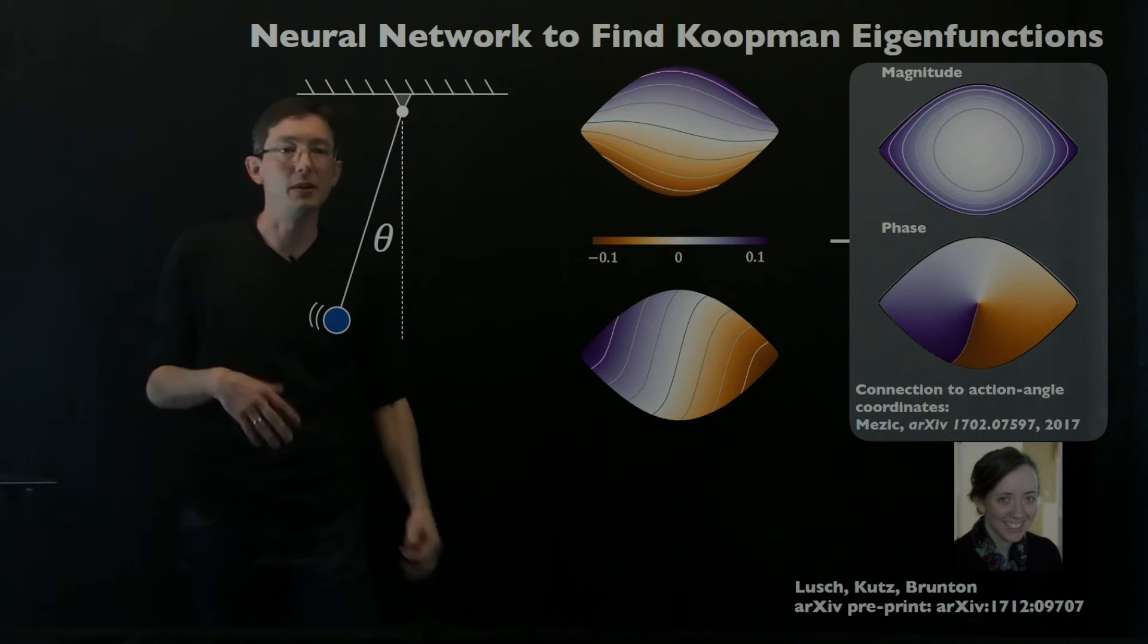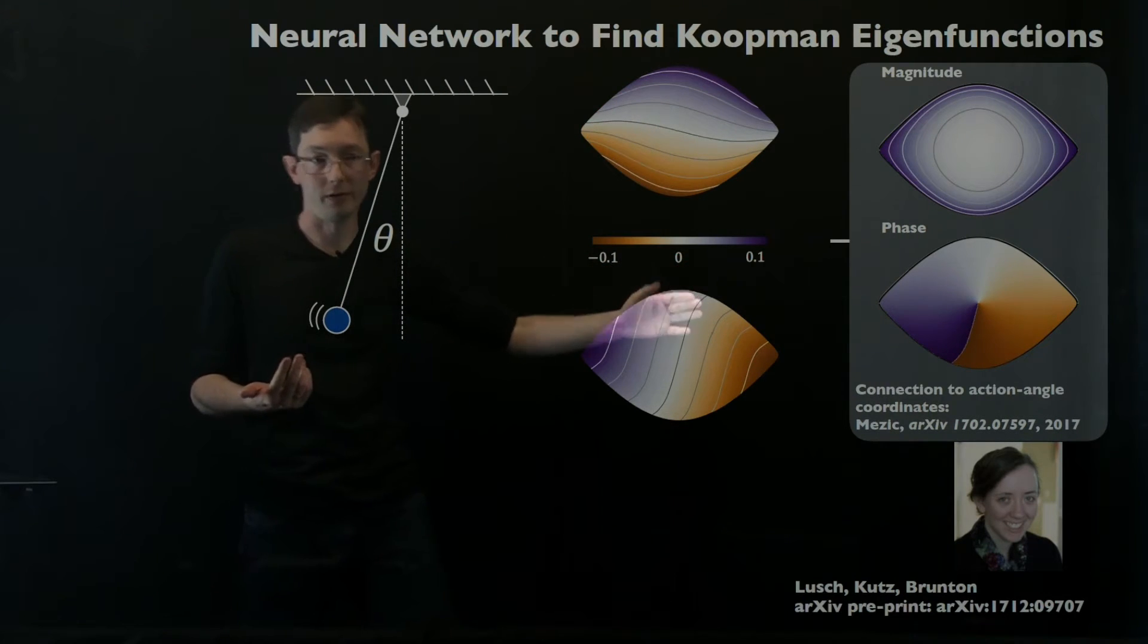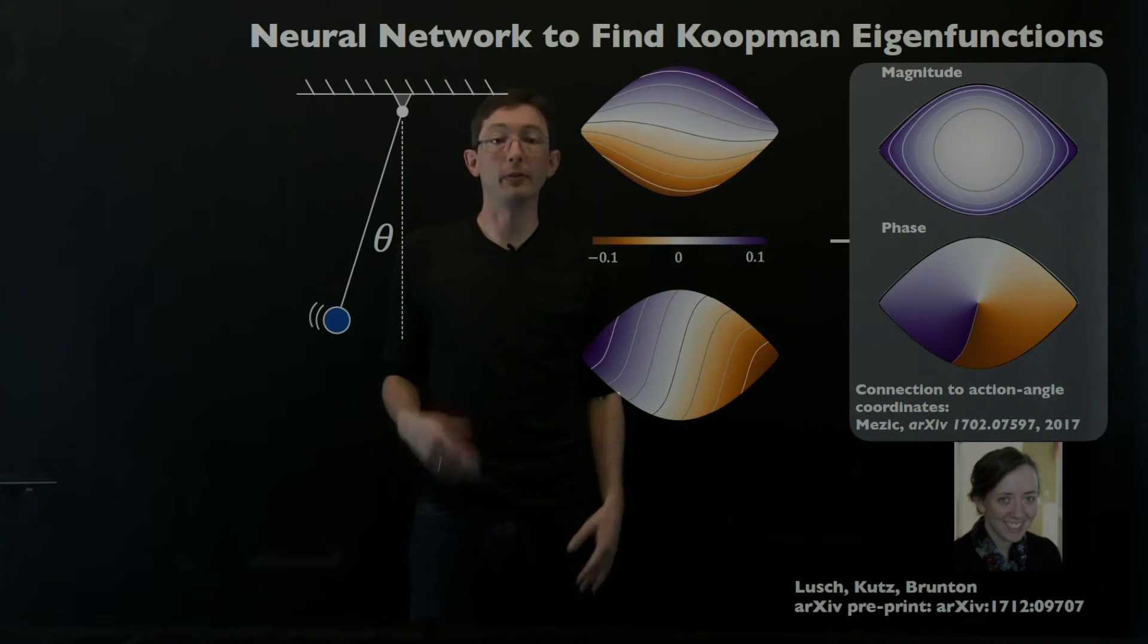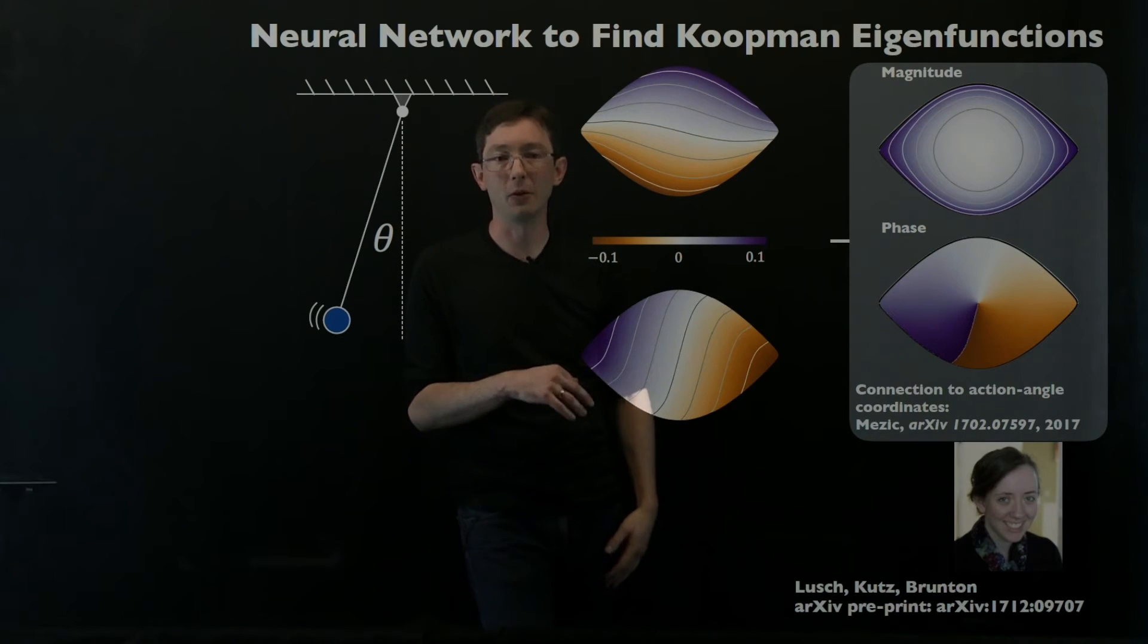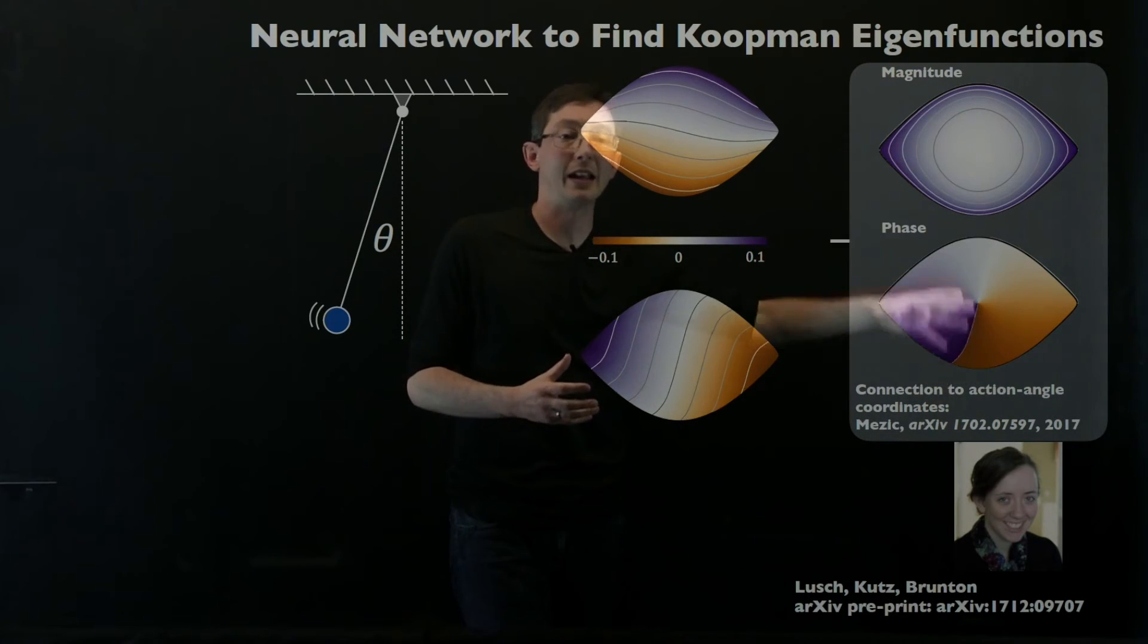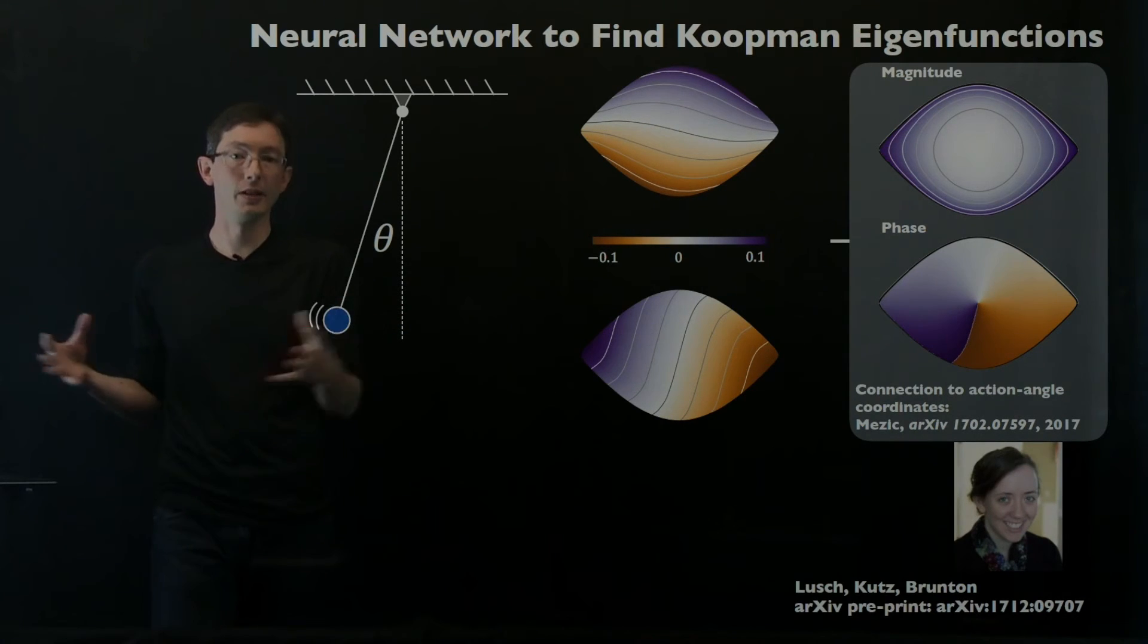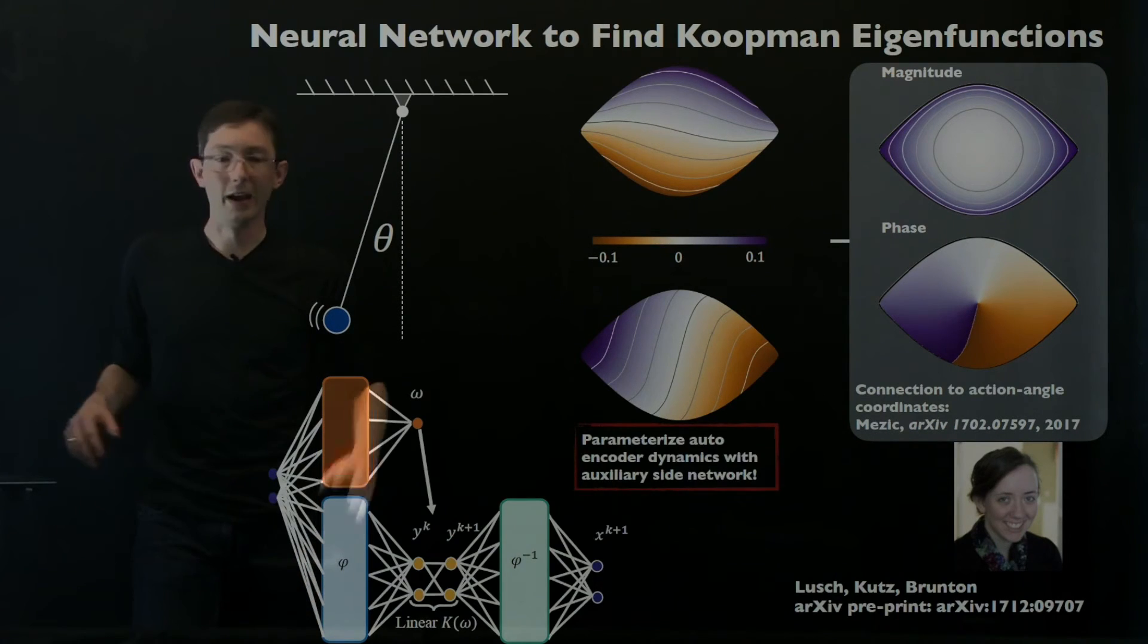After talking to Igor Mezic, he pointed out that you can actually map these into magnitude and phase coordinates and there's this really beautiful connection to these action angle coordinates from classical mechanics that you can read about in his archive paper from 2017. That was kind of a fun connection we made. We showed this to Igor and he pointed out if we map it in this coordinate system, we basically get action angle coordinates for this pendulum, which is really nice and satisfying because that connects us back to this kind of hundred years or more than a hundred years of classical mechanics.